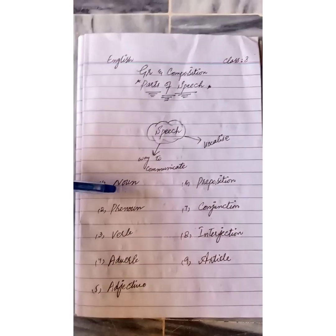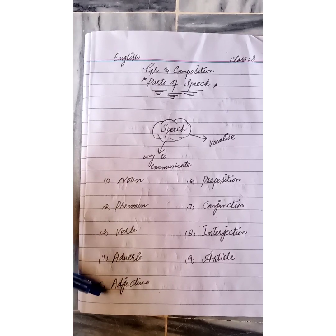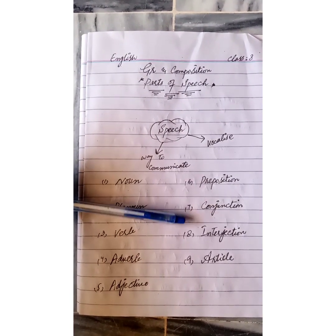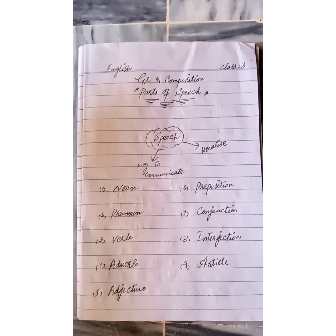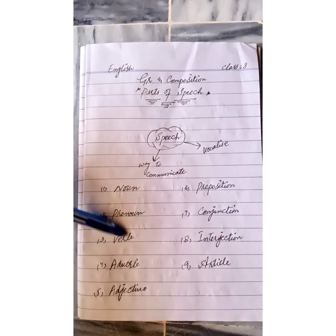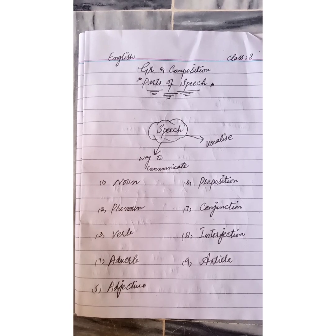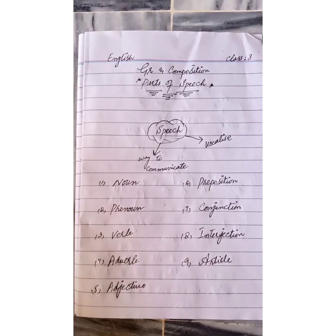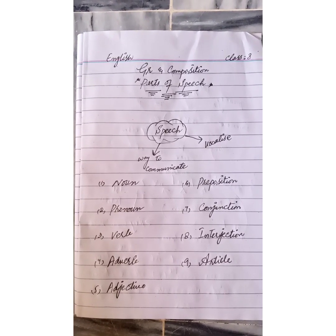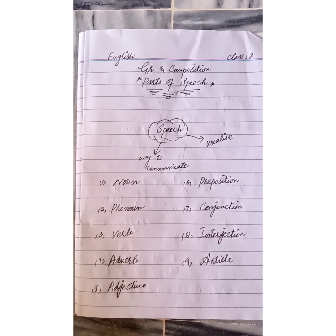As you can see: noun, pronoun, verb, adverb, adjective, preposition, conjunction, interjection, and article — these are the nine parts of speech we are going to discuss today. I'm going to give you some examples as well, and I hope you will understand clearly.